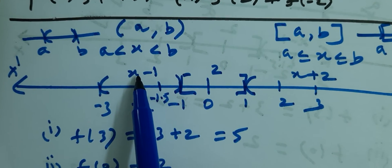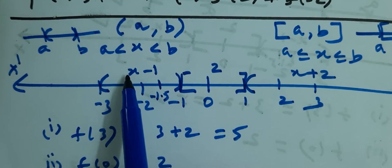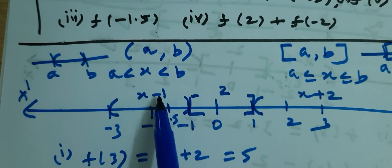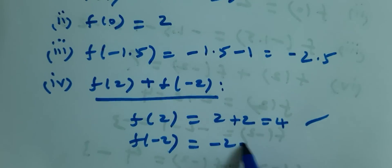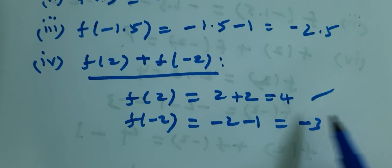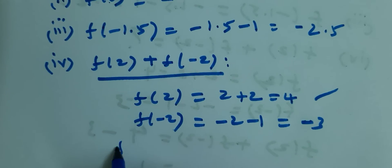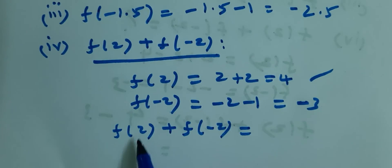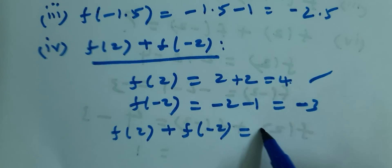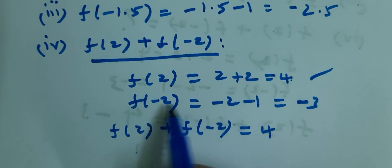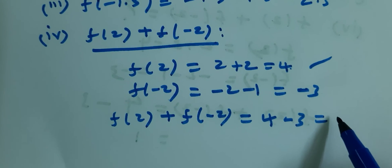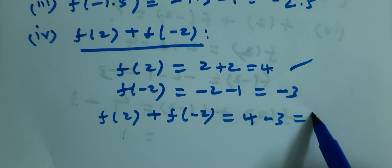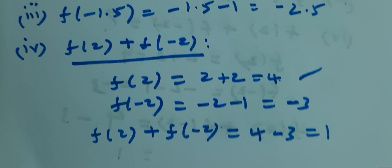Applying x minus 1: plug in x equals 2, we get 2 minus 1 equals... For minus 2, apply x minus 1: minus 2 minus 1 equals minus 3. So f of 2 plus f of minus 2 equals 4 plus minus 3, which equals 1.